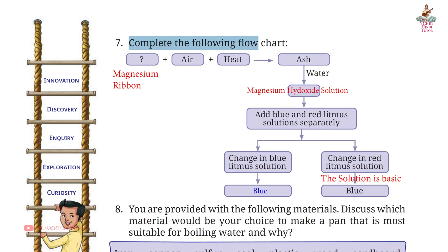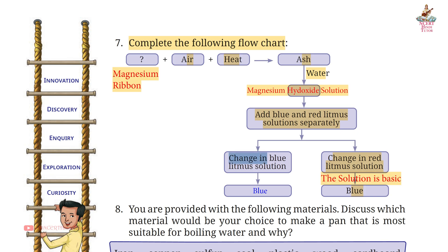Question 7: Complete the following flowchart. Magnesium ribbon + air + heat → we get ash → add water → we get magnesium hydroxide solution → add blue and red litmus solution separately. Change in red litmus solution: turns blue — this shows the solution is basic. Change in blue litmus solution: stays blue, because the solution is basic and the blue litmus will not change its color.